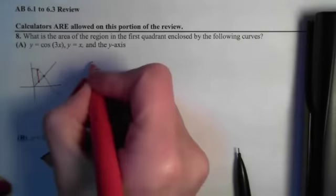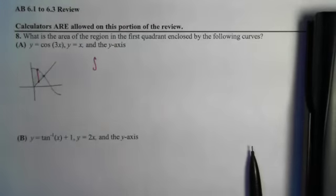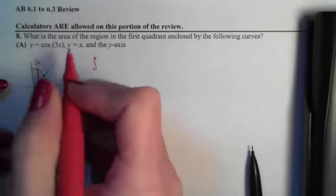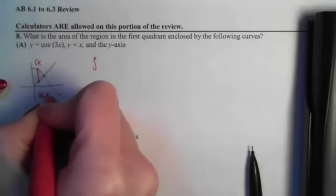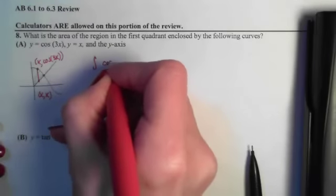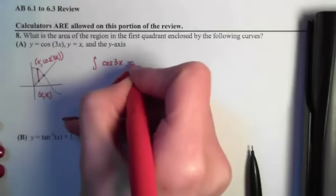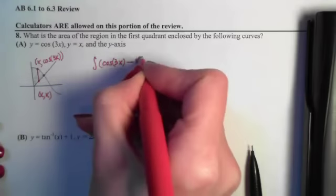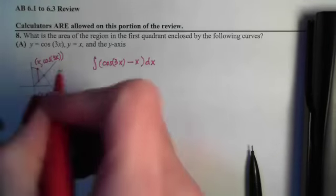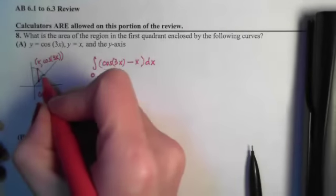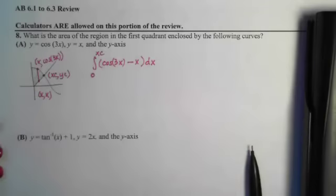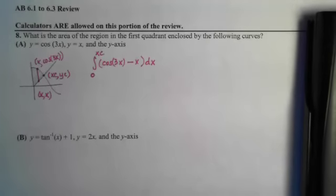So that means we're going to set up the length of that strip. Because I am doing area, yes. X-coordinates are shared. The y-coordinate comes from the curve that it's on. So the length of that strip is going to be cos(3x), which is the top y-coordinate, minus x, which is the bottom y-coordinate, times the thickness, which is dx, and now we need to know how far left and right we're going to go. So that's going to be from zero to whatever that intersection point is. So we're going to find that intersection and then use it. So here's our setup. We need to find that xc.